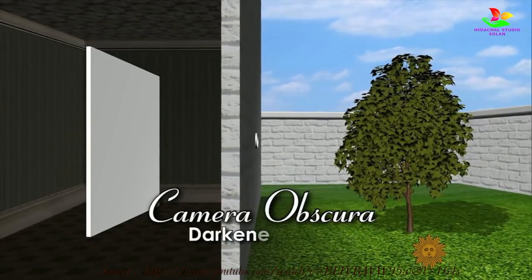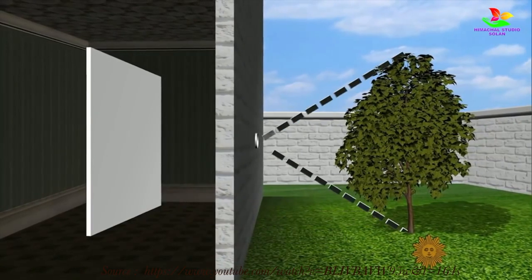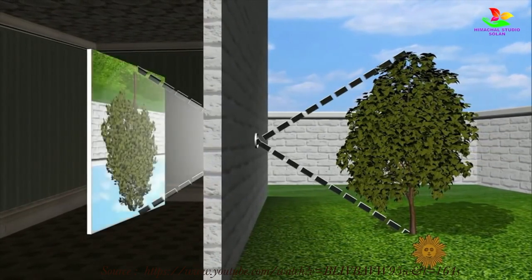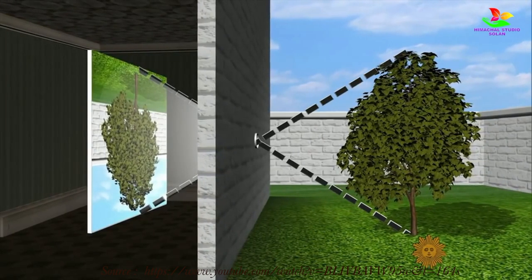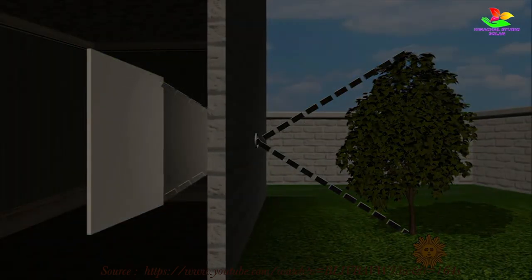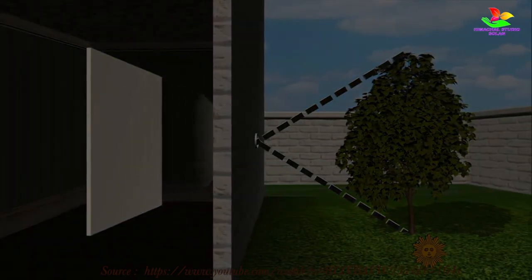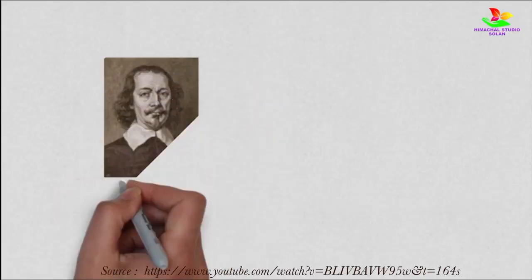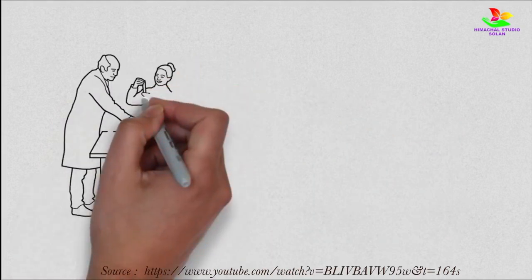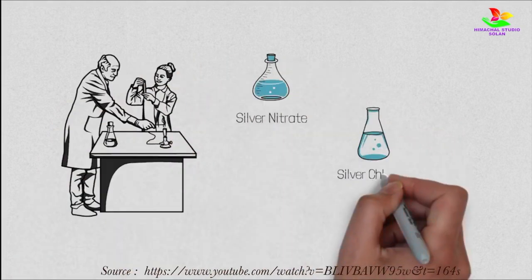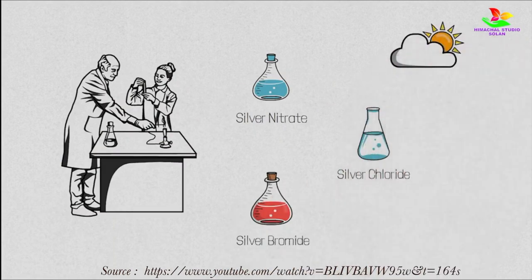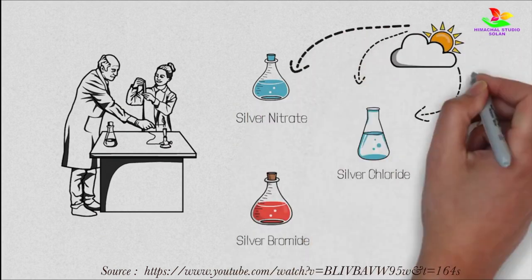This image could only be seen as long as the light continued to enter through the hole. In 1694, a Dutch scientist named William Hamburg conducted an experiment and made a significant discovery. He found that substances like silver nitrate, silver chloride, and silver bromide underwent changes in their textures when exposed to light — changes he termed photochemical changes. Based on this theory, the first concept of making images produced by the Camera Obscura more permanent was developed using chemicals like silver chloride and silver bromide.